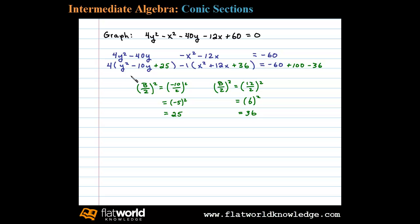Now we'll factor. We have 4 times a perfect square trinomial, or 4(y - 5)² - (x + 6)² = 4. Now, one more step: standard form requires this to equal 1, so we'll divide both sides by 4.